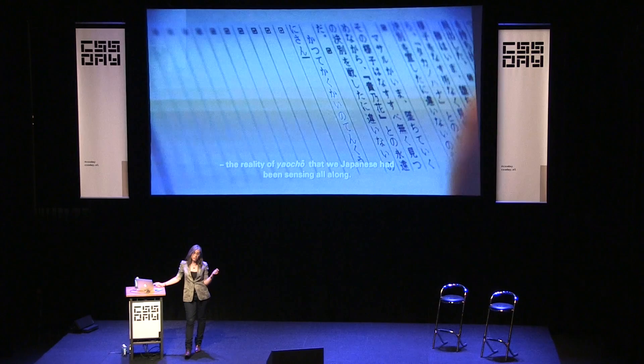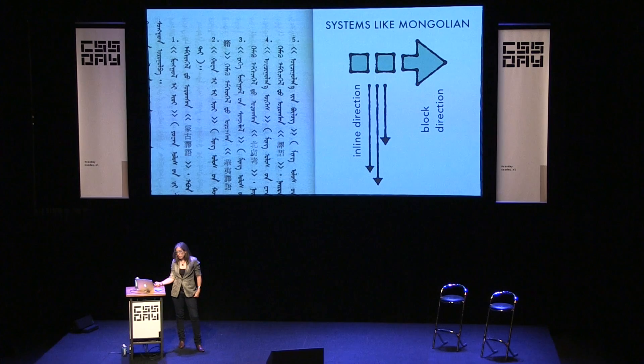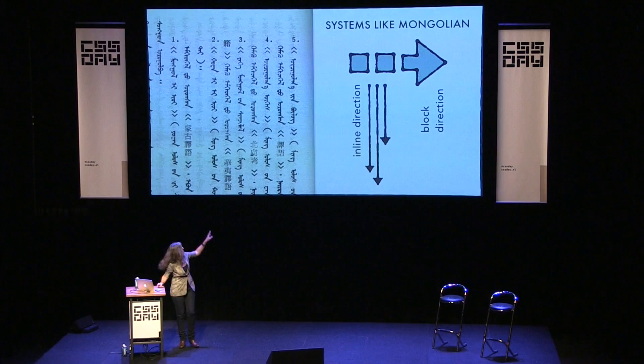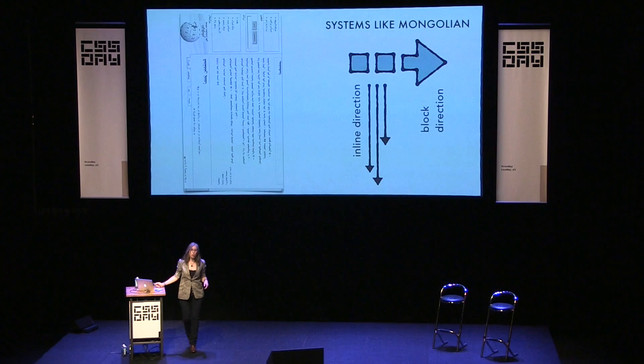There are two systems I want to show you. First, Mongolian: the block direction is left to right and the inline direction is top to bottom. You can see an ordered list — 1, 2, 3, 4 — going in columns because the block direction goes that way. There's even a Wikipedia diagram showing how the Wikipedia page for Mongolian might look if typeset properly in Mongolian — it sort of feels like the page is sideways, but the image itself is upright. The second system is Han-based: languages like Chinese, Japanese, and Korean, which run with block direction right to left and inline direction top to bottom.